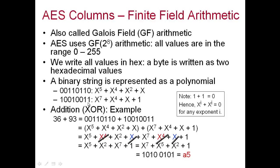For example, a binary byte can be written as a polynomial such as x^7 + x^5 + x^4 + x^3 + x + 1 — that is how we represent a binary string as a polynomial. For addition in GF(2^8), it is basically an XOR operation.